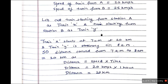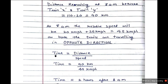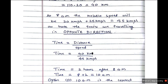At 8 am when train Y also starts, both trains are moving in opposite directions. The total distance remaining is now 90 km, because train X has already covered 20 km. When both trains travel towards each other, relative speed adds up: 20 plus 25 = 45 km per hour. Using the formula time = distance / speed, we have 90 km divided by 45 km per hour, which gives us 2 hours after 8 am.